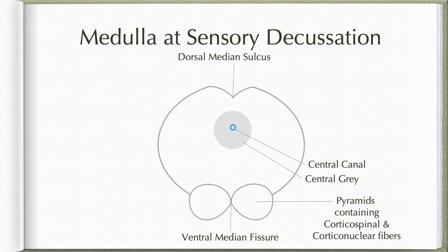At the level of pyramidal decussation, the pyramids contained only corticospinal fibers, whereas at this level they have both corticospinal and corticonuclear fibers. The corticonuclear fibers will relay in the various medullary nuclei at this level.